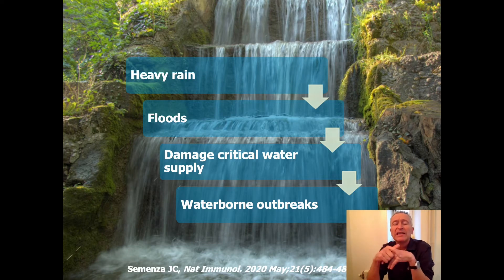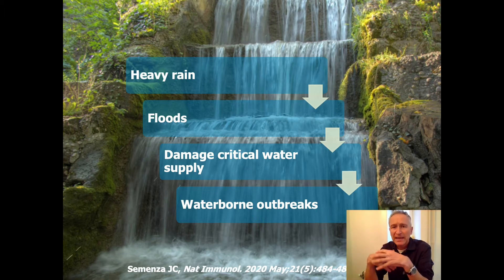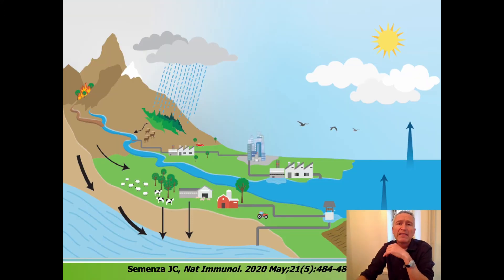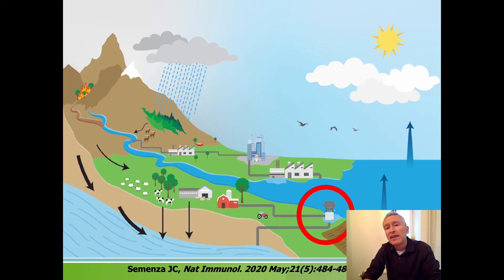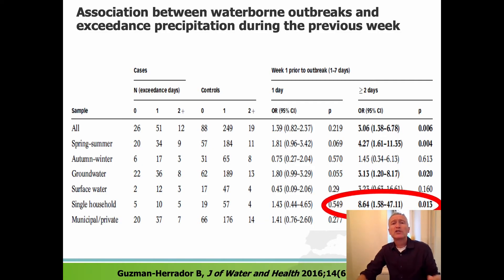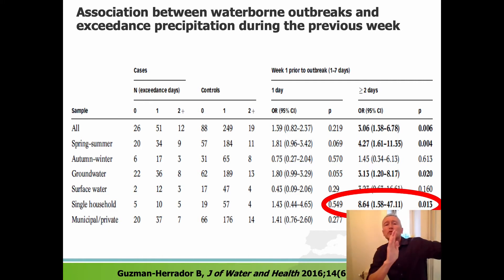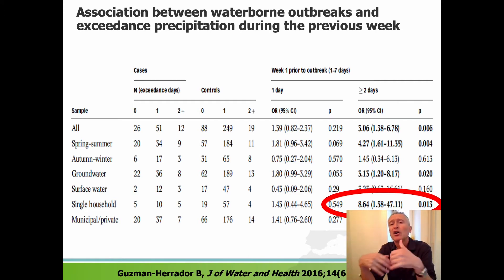Another example is a heavy rain event that leads to flooding, and then that flooding damages critical infrastructure like a well, which then in turn leads to a waterborne outbreak. This is illustrated in the bottom corner of the graph, where you can see a well that has been inundated by flooding due to the rain, damaging the water intake for a single household water supply. We can show epidemiologically that there was an almost nine-fold increased likelihood of having a waterborne outbreak if it was preceded by this extreme precipitation event. So there is epidemiologic evidence that these extreme events cause waterborne outbreaks in Scandinavia.